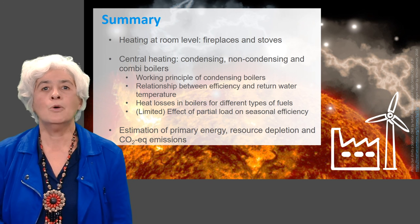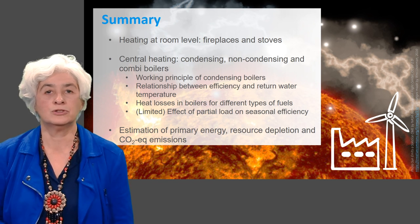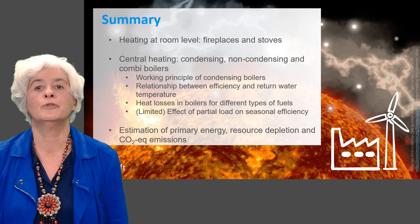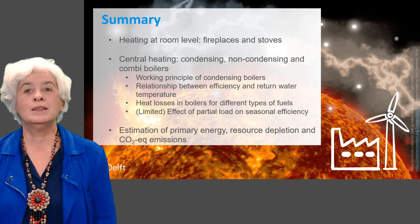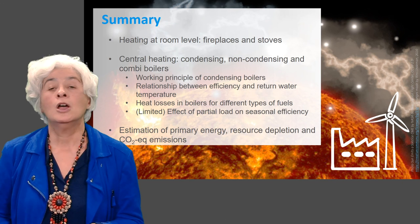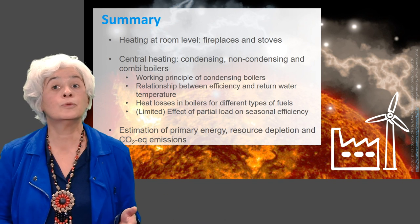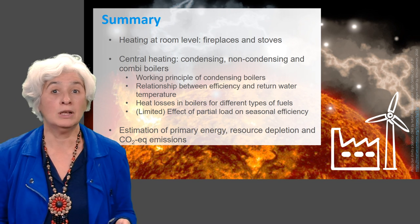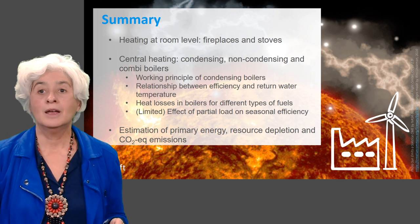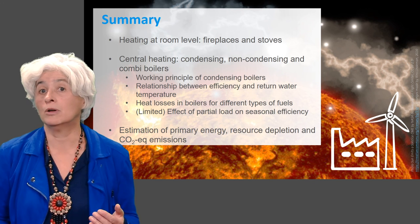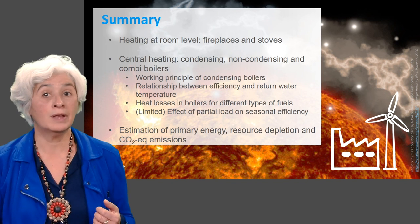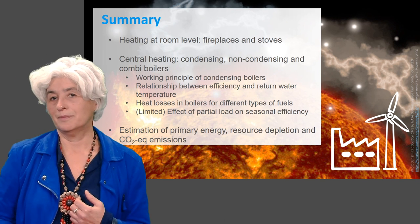In this lecture, you have learned how heat production by fuel combustion works. We handled systems working at room level like fireplaces and stoves, then central heating boilers and their connection to radiators or air handling units. We covered the principle of condensing boilers and the relationship between their efficiency and return water temperature, different heat losses in a boiler, the influence of partial load on seasonal efficiency, and efficiency ranges for different fuels and boiler types. Finally, we found that a non-condensing boiler of efficiency 0.7 emits 57% less CO2 than an electrical boiler powered by the Dutch electricity grid. Thank you for your attention.